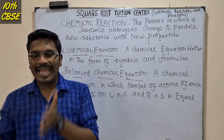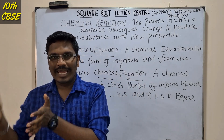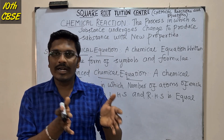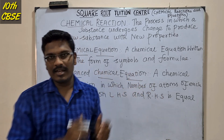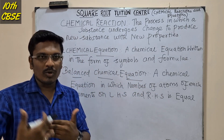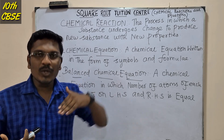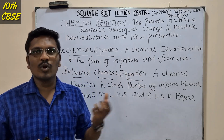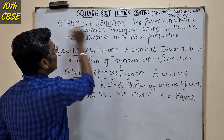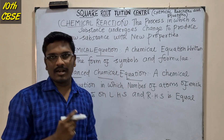That is why we are going to talk about reactant and product. Reactant is on the left hand side and product is on the right hand side. On the reactant side, all substances take part, and the produced substance is called the product. That is called a chemical reaction.